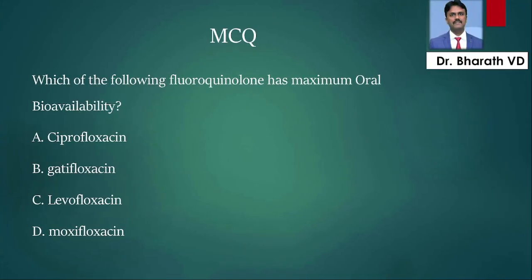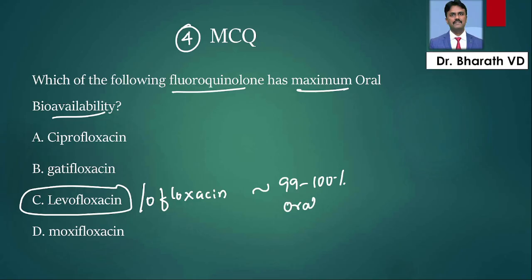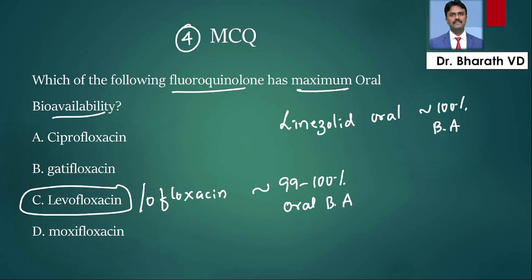Fourth question: which fluoroquinolone has maximum oral bioavailability? Even if you don't know, the answer is levofloxacin. Levofloxacin and ofloxacin have approximately 99–100% oral bioavailability. Similarly, linezolid given orally also has approximately 100% oral bioavailability. These are tested frequently.